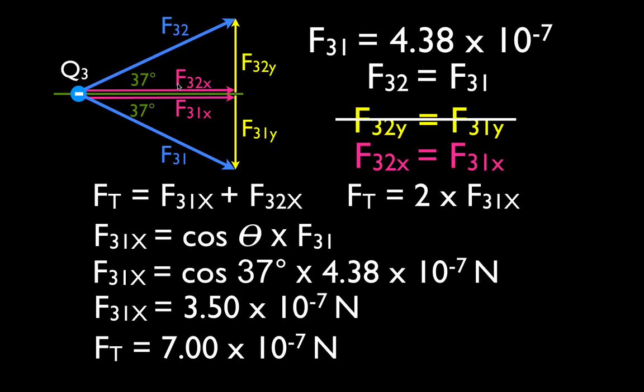So this started out looking a little complicated — there are steps to follow, making sure you handle all the numbers, cancel y-components, and notice key symmetries. But it turns out to be a relatively straightforward problem, kind of like projectile motion. Hopefully you found that helpful. Give a thumbs up and a comment below, and we'll see you in the next video. Thank you very much.